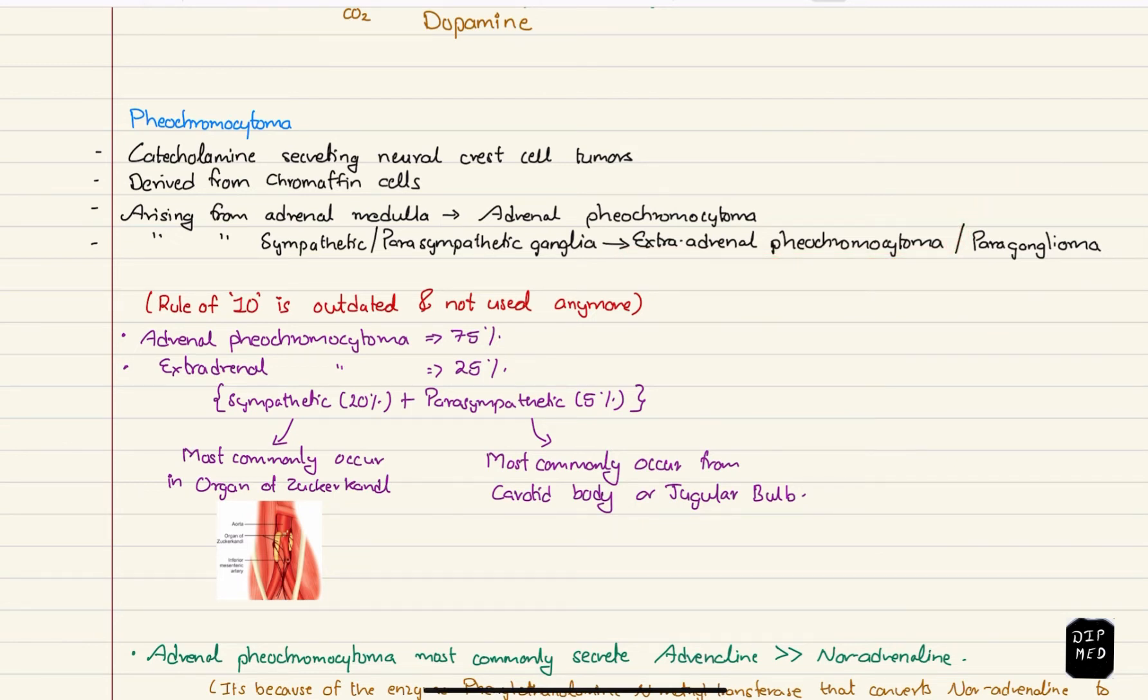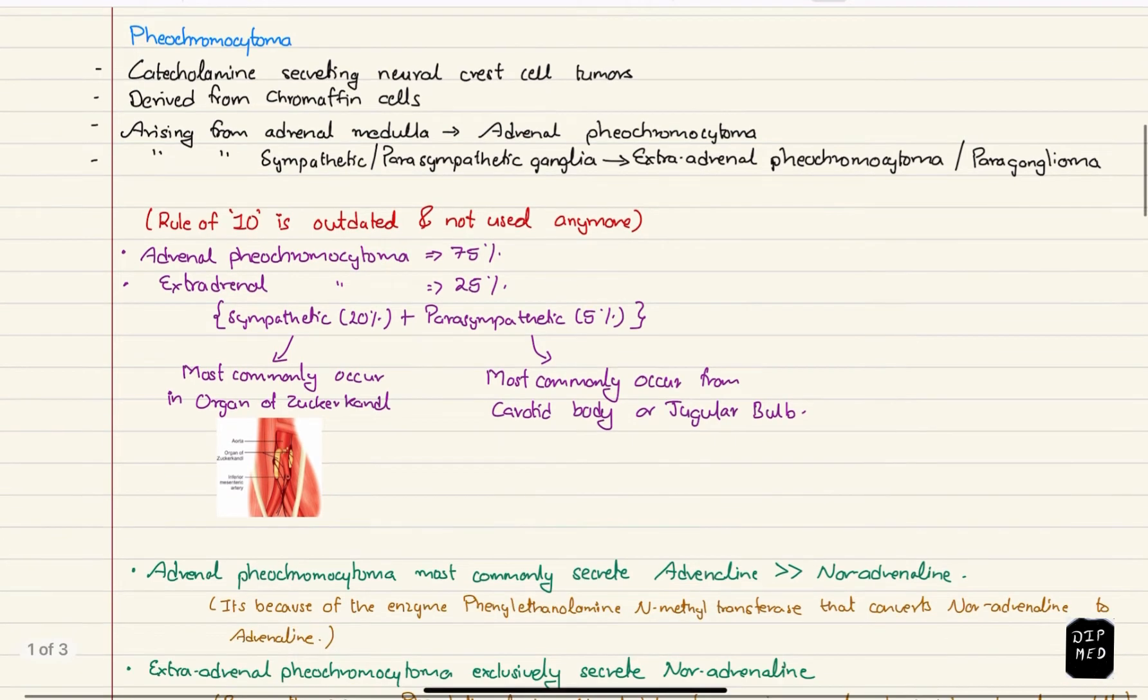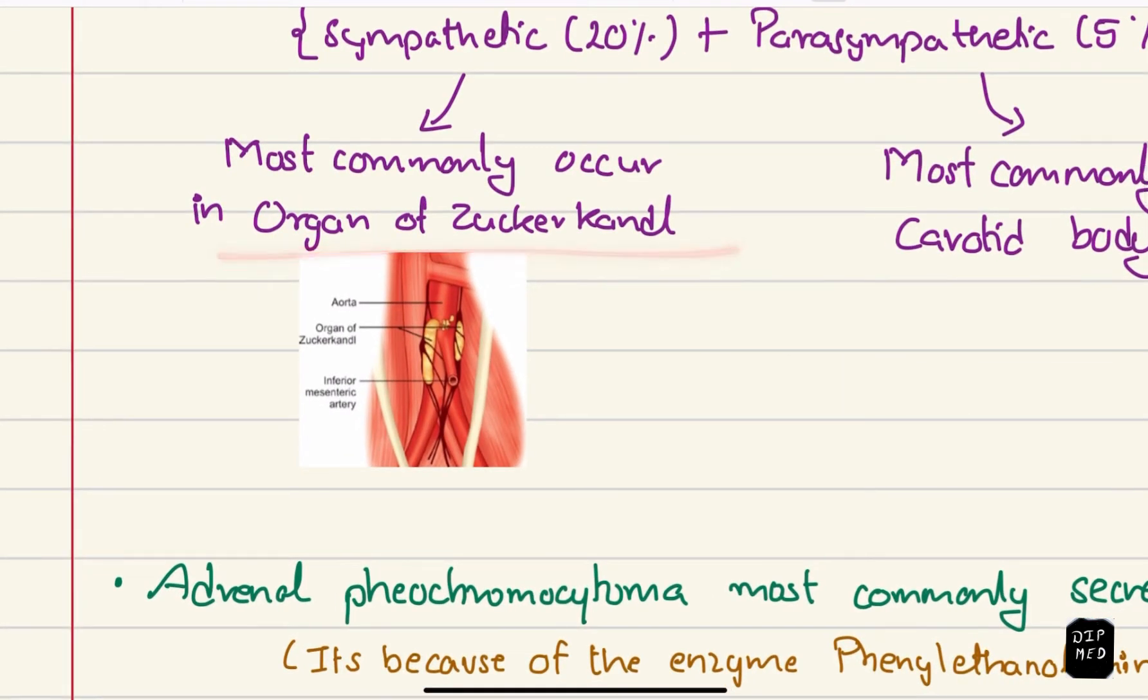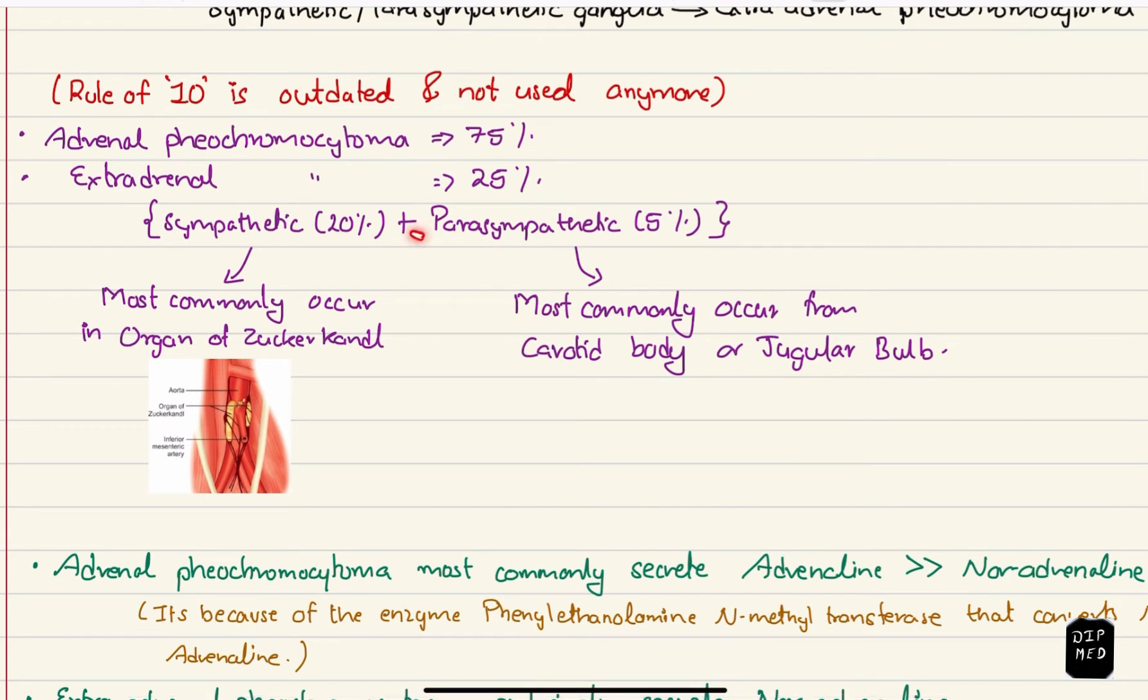Previously, rule of 10 used to be applied for pheochromocytoma which stated that 10% of pheochromocytoma are extraadrenal, 10% are bilateral and 10% could be malignant. But now this rule is outdated and not used anymore because it was found that extraadrenal pheochromocytoma are actually 25% and adrenal pheochromocytoma are 75%. Out of 25% extraadrenal pheochromocytoma, 20% arise from sympathetic ganglia, most commonly from organ of Zuckerkandl. And the remaining 5% arise from parasympathetic ganglia either in carotid body or jugular bulb.